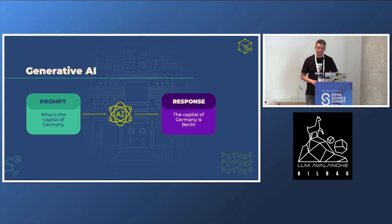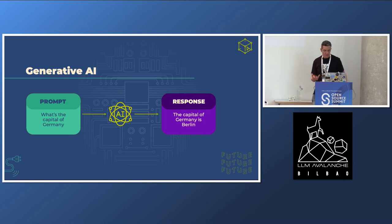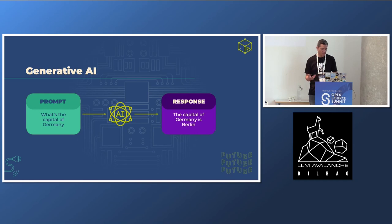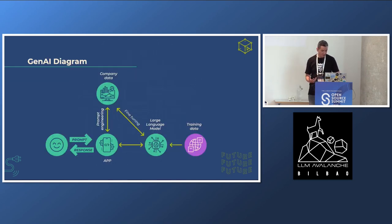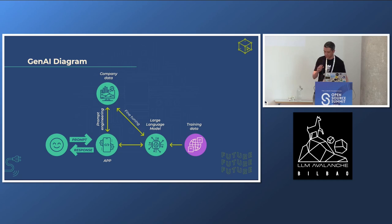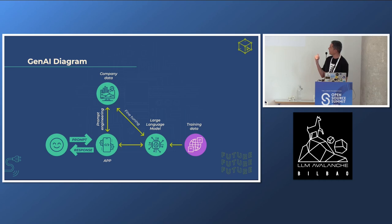So what is generative AI? Basically, we have a prompt where we enter text or an image or whatever, and it generates a response. For example: 'What's the capital of Germany?' — and using those large language models, it's going to respond, 'The capital of Germany is Berlin.' This is the diagram of how it works. Someone asks a question via a prompt, this goes to an application, and this asks the large language model for a response. To create this large language model, we use training data — a huge amount of data — and this returns a response to the user.